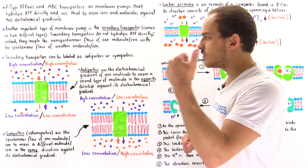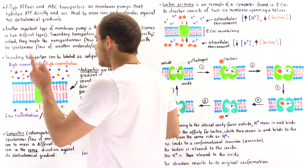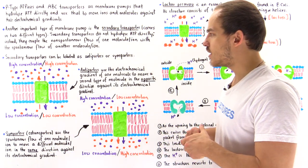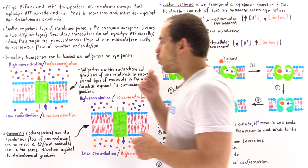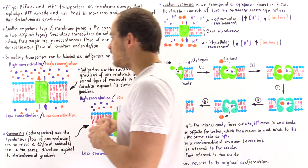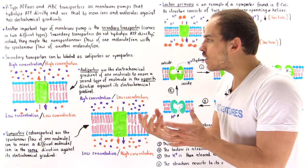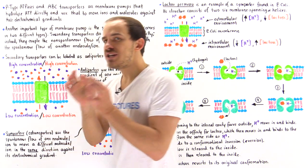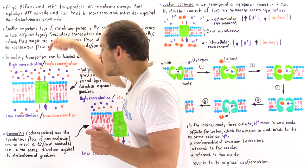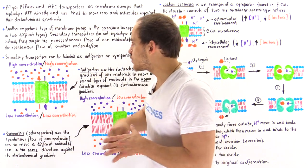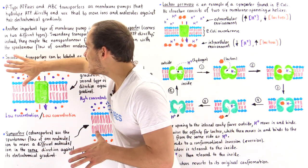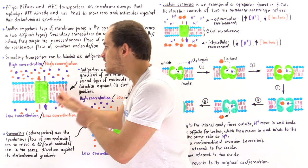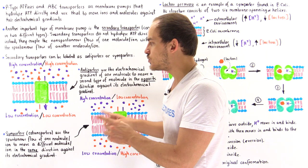On the inside, we have a low concentration of both the purple and the orange molecules. What this antiporter basically does is allow these purple molecules to naturally move down their electrochemical gradient — from high concentration to low concentration — and this doesn't actually require energy.